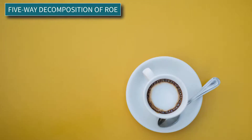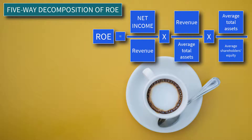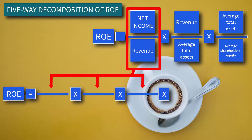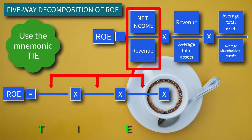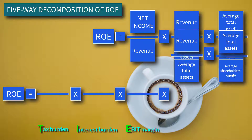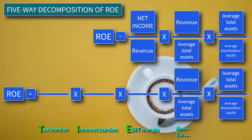Now let's go to the five-way decomposition of ROE. This can be done by decomposing Net Profit Margin into three components. We can use the mnemonic TIE: T stands for tax burden, I for interest burden, and E for EBIT margin. Bring down the last two formulas of Asset Turnover and Equity Multiplier.